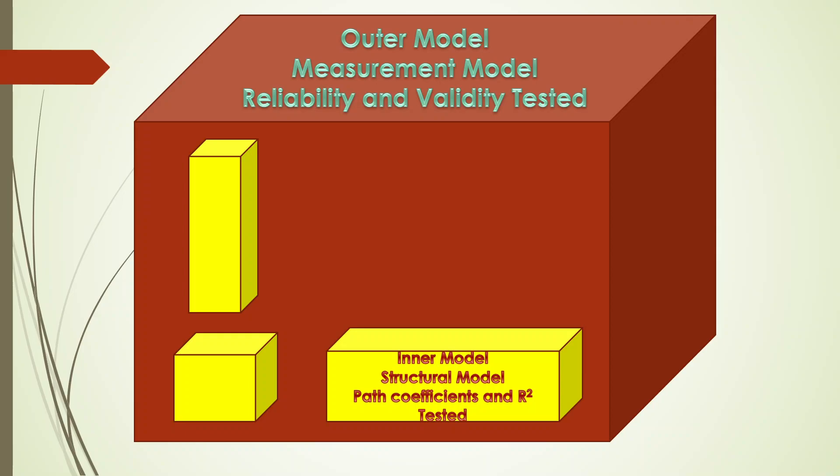Once we establish the reliability and validity of the outer model, then we will move into the inner model, that is the relationship of construct with construct. So in that scenario you will be using some different statistics: we will use path coefficient and R square. The inner model is just like your furniture which you are going to keep. You can organize this any way. But when I talk about outer model, it's necessary that first it is tested and then only you can go for inner model. So according to the authors, first you have to establish the reliability and validity of the model and then only you should go for inner model.